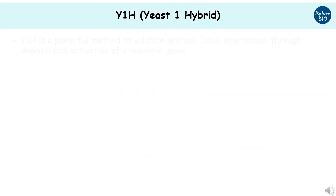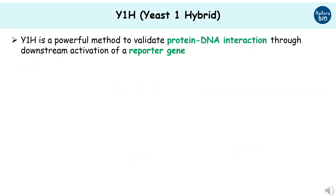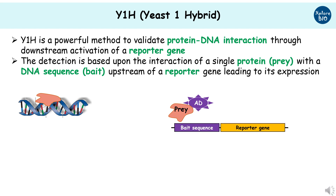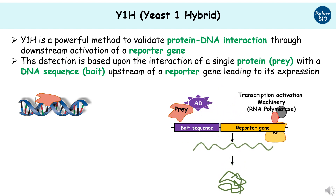Yeast one hybrid, or Y1H, is a very powerful method to validate protein-DNA interaction through downstream activation of a reporter gene. The detection in yeast one hybrid is based on the interaction of a protein of interest, also called the prey protein, with a specific DNA sequence known as the bait sequence, which lies upstream of a reporter gene leading to its expression. It is essential to note that the principle is based on transcription factor.